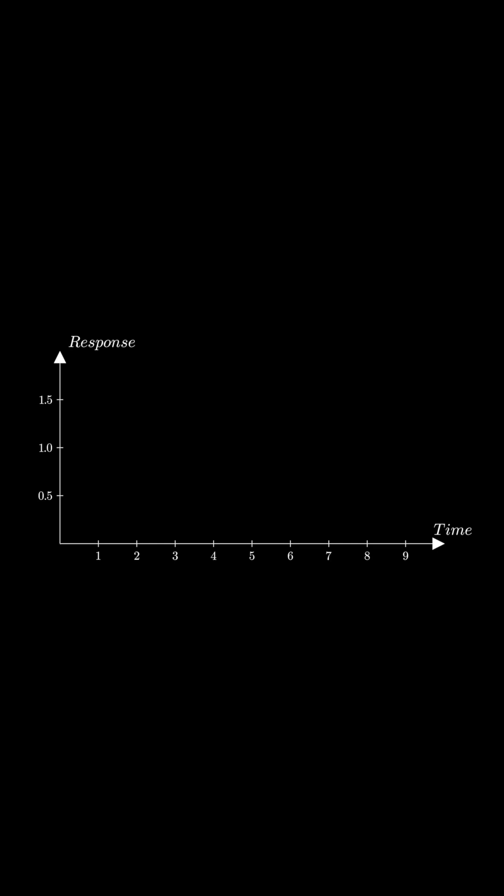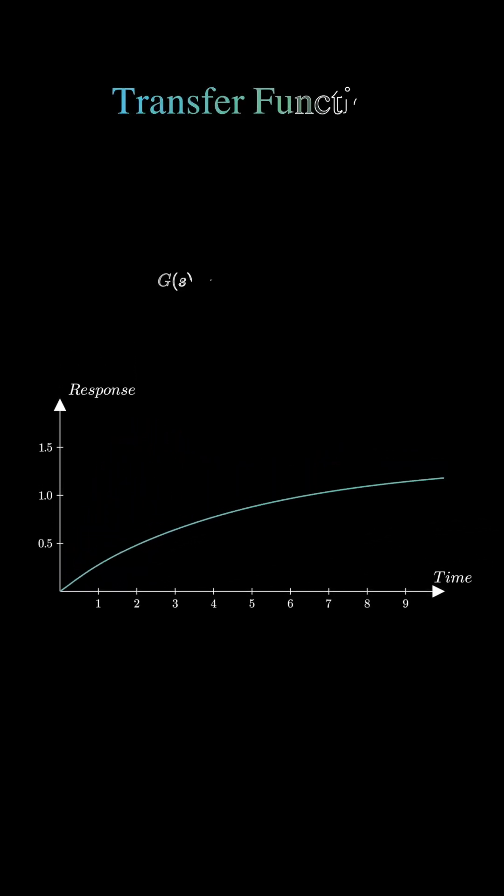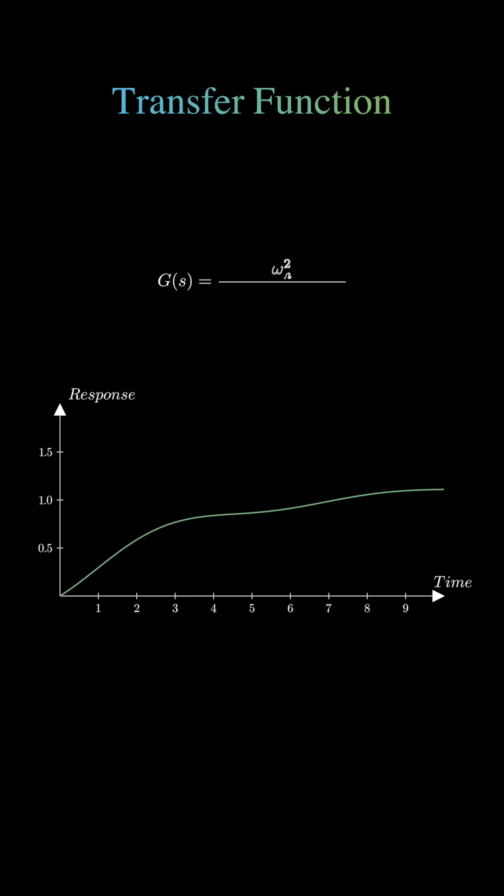The step response is directly tied to the system's transfer function, which can be written as G of s equals omega n squared divided by s squared plus 2 zeta omega n times s plus omega n squared. Here, omega n is the natural frequency, and zeta is the damping ratio.